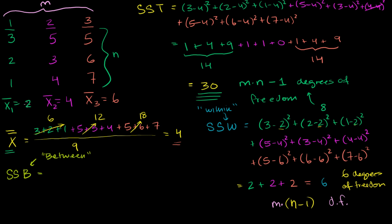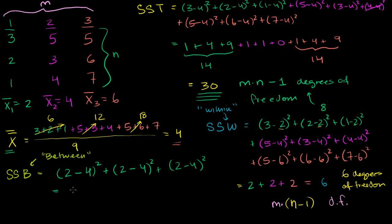Another way to think about it: how much of this total variation is due to the variation between the means, between the central tendencies? For each data point in the first group, how much variation is due to the difference between this group's mean and the mean of means? For the first data point, the variation is its sample mean: (2 minus the mean of means) squared. The same thing for the second and third data points in that group. So this equals 3 times (2 minus 4) squared, which is 3 times 4, equal to 12.